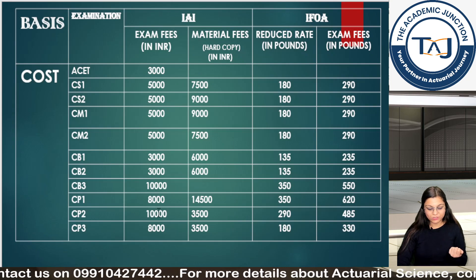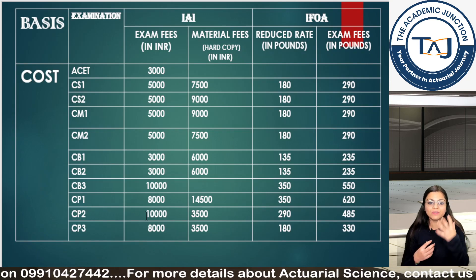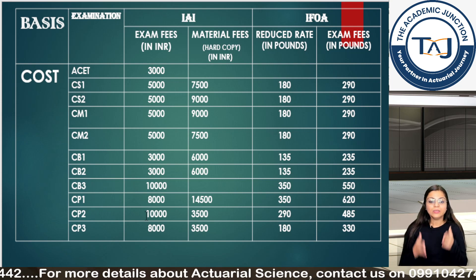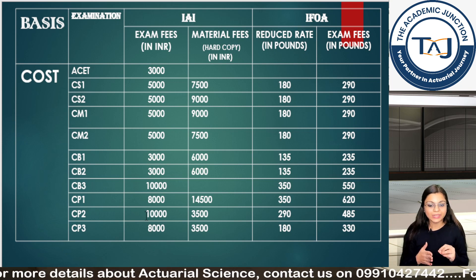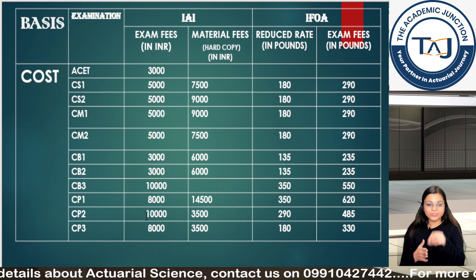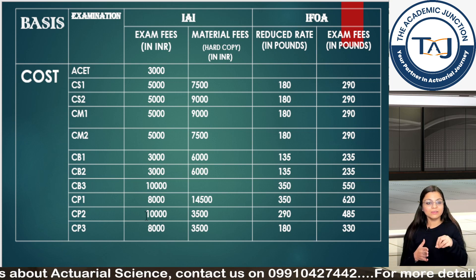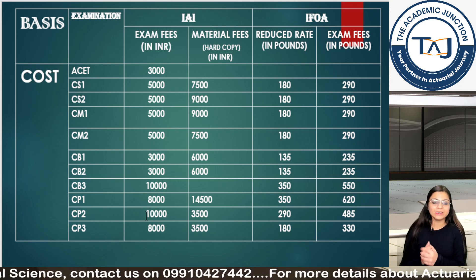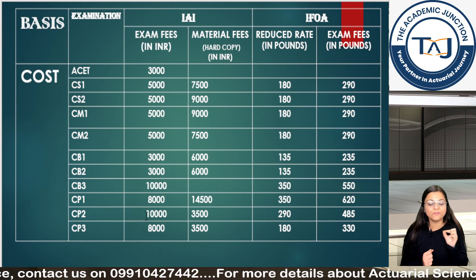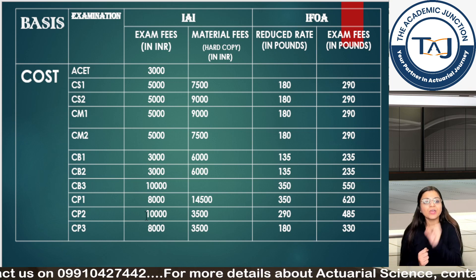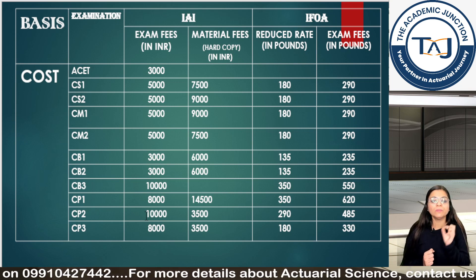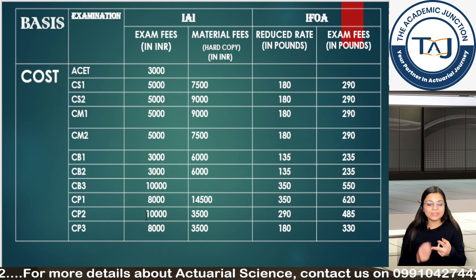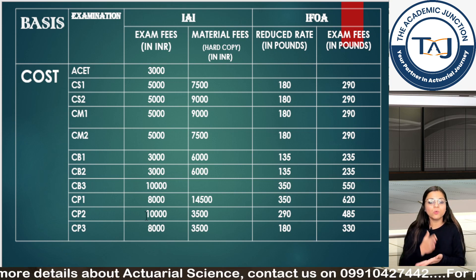Now coming to cost, which is an important factor when choosing a society. For II, after clearing ACET you must become a member, and there is a compulsion to purchase study material. For example, for CS1 the exam fee is 5,000 Indian rupees and the compulsory material costs around 7,500 rupees. For IFOA, different rates apply depending on whether you are reduced-rate eligible.